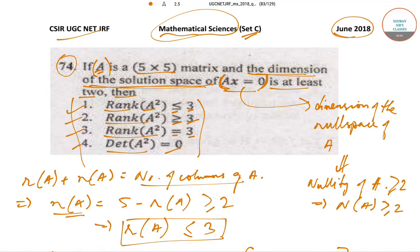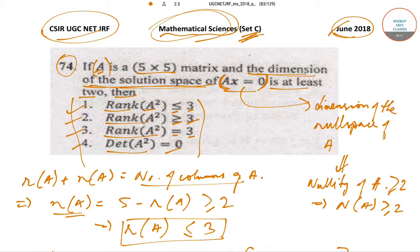Hello students, welcome to Softest Classes. Today we will be solving the CSIR UGC NET JRF questions from the June 2018 paper — the Mathematical Sciences paper, Set C.